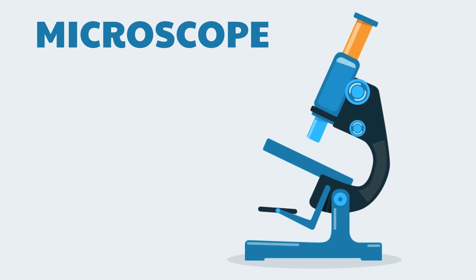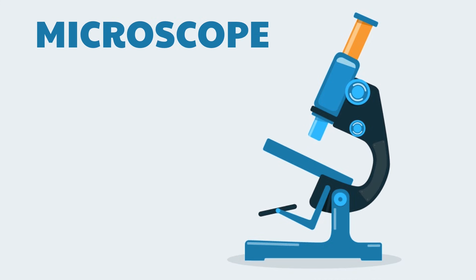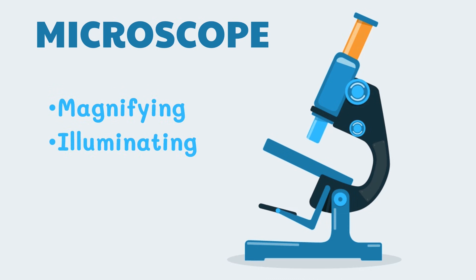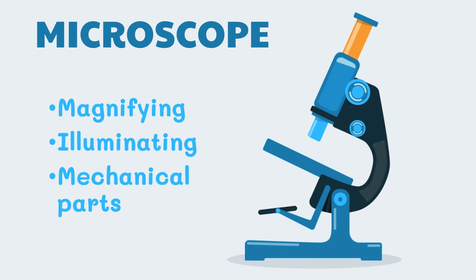A microscope is a tool that can help you see tiny objects and living organisms. It comprises three major parts based on their functions: magnifying, illuminating, and mechanical parts.